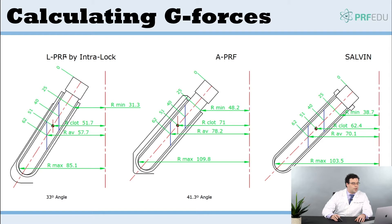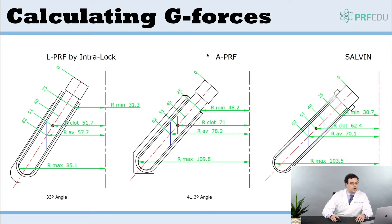The L-PRF protocol is 2700 rpm for 12 minutes, and the A-PRF protocol is 1300 rpm for eight minutes — some people use a 14-minute protocol. Now, how do we calculate g-forces? We're going to go ahead and do an example. The r-max for the Intro Lock is 85mm, and the r-max for the A-PRF is 109mm.